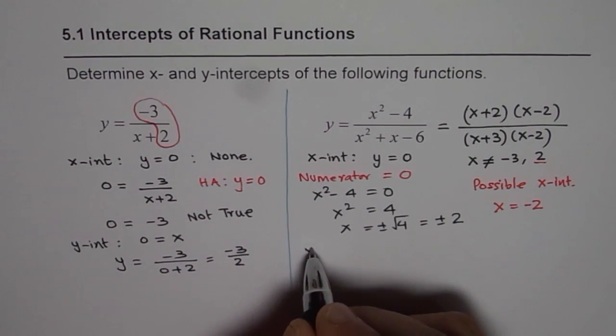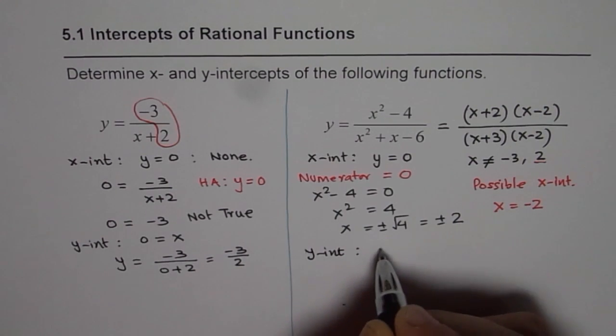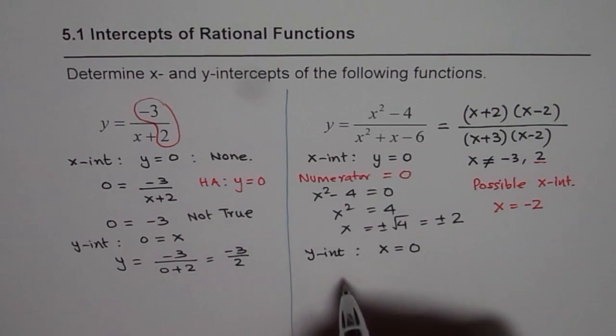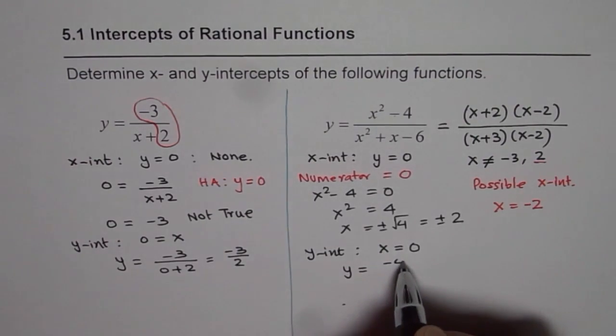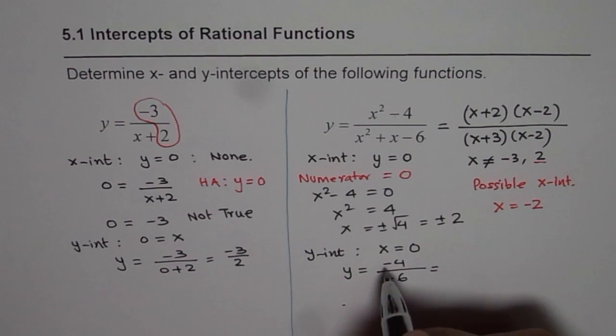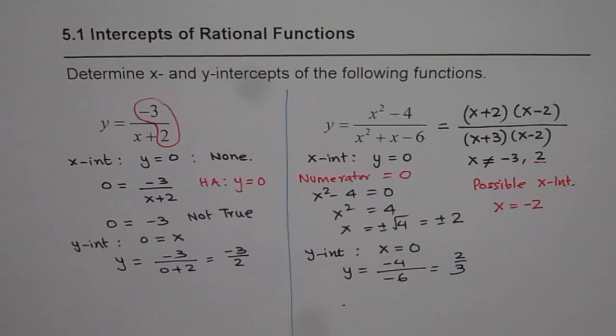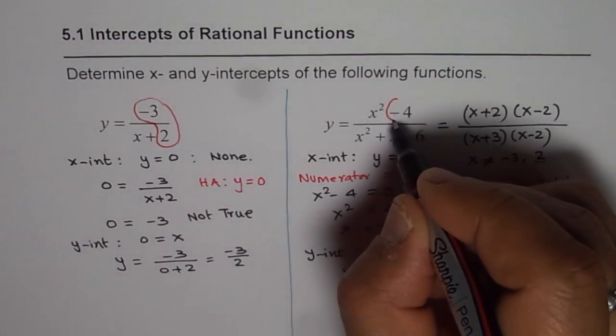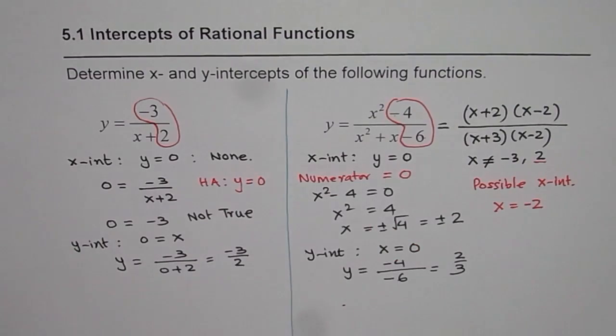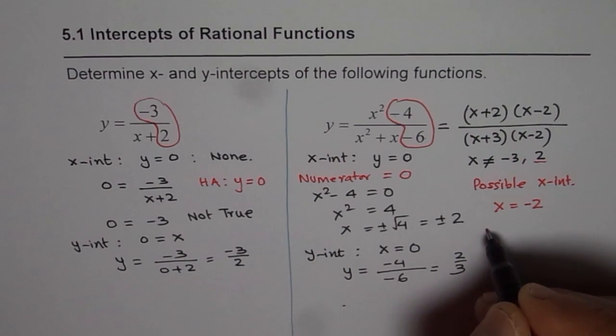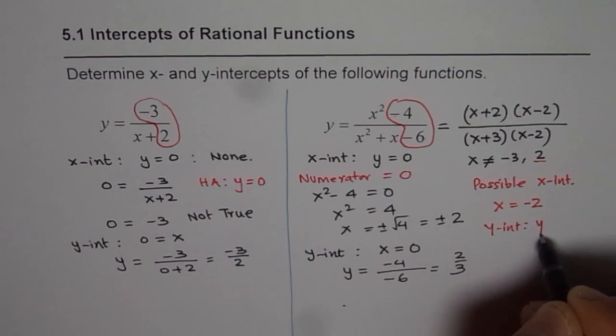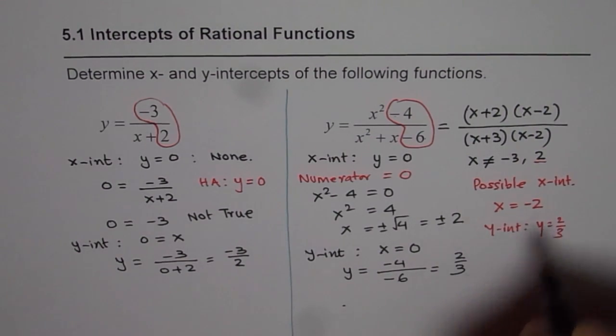Now let us find y intercept. For y intercept, we should write x equals 0 in the equation. So we get y equals, when x is 0, we get minus 4 over minus 6, and that gives us 2 over 3. As we saw here, the y intercept is the ratio of these constants. These constants ratio will always give you y intercept. So y intercept is y equals 2 over 3.